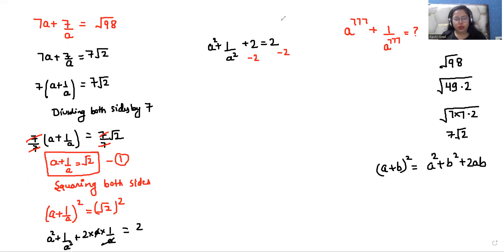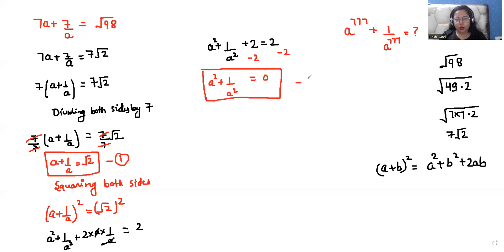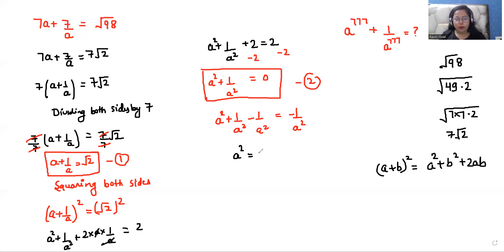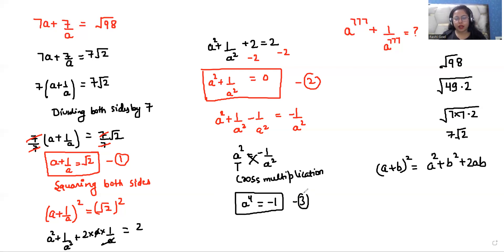So a squared plus 1 over a squared plus 2 minus 2 equals 0, and similarly the right hand side is also 0. So a squared plus 1 over a squared equals 0, which is equation number 2. From this, a squared equals minus 1 over a squared. Doing cross multiplication gives us a power 4 equals minus 1. This is equation number 3.